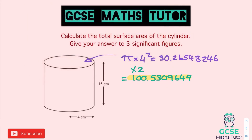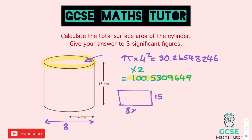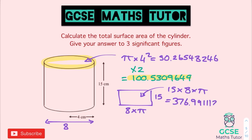Now moving on to the curved surface area — the rectangle going around the outside. We've got a height of 15, and we need the circumference as the other dimension. The radius is 4, so the diameter is 8. So the area of this rectangle is length times width: 15 times 8 times pi, which comes out as 376.9911184.